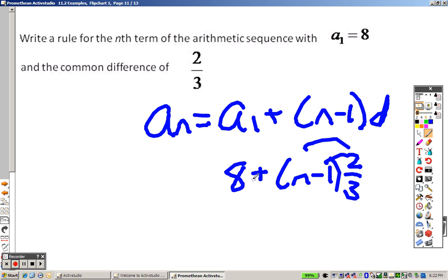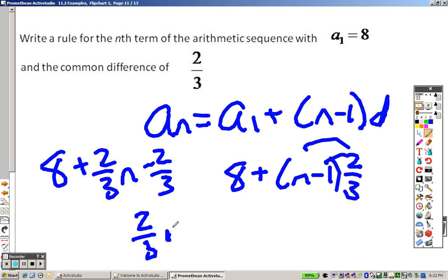So I end up getting 8 plus 2 thirds N minus 2 thirds. And 8 minus 2 thirds ends up giving you 22 over 3. So you get 2 over 3 N plus 22 over 3. And there's your pattern.